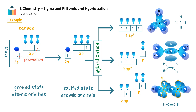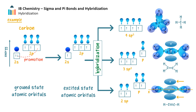Two of the remaining unhybridized p orbitals in each carbon atom are in the y-plane. These each contain one electron and overlap to form a pi bond. Likewise, the two unhybridized p orbitals in the z-plane overlap to form a second pi bond. The two lobes of one pi bond are above and below the bond axis, which is in the x-plane, and the two lobes of the other pi bond are at the sides of the bond axis. The four lobes of electron density are considered to merge into a cylinder of negative charge.